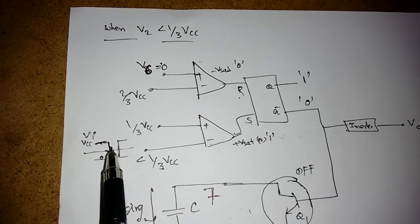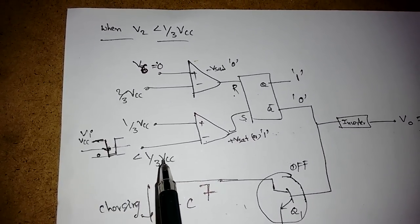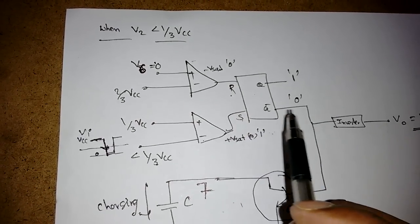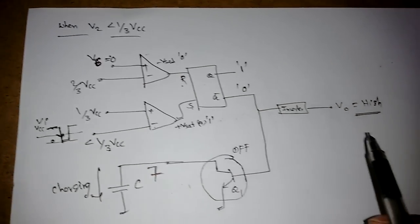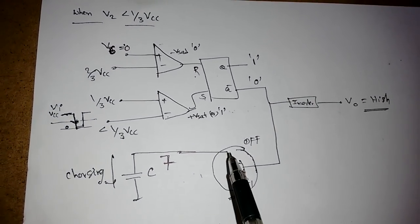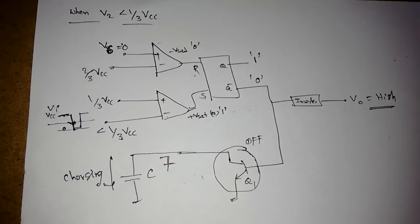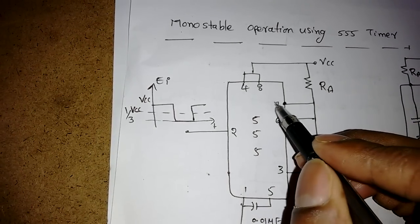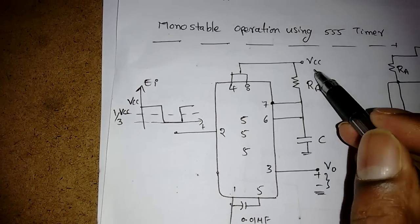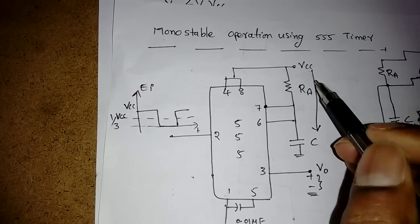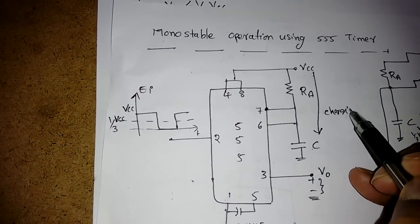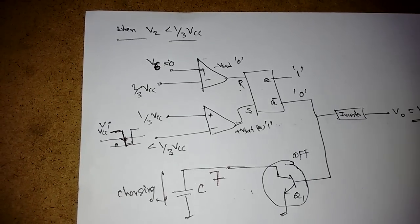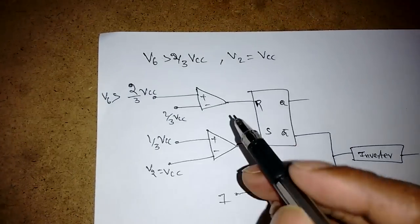To summarize: whenever we apply a negative going trigger pulse less than 1/3 Vcc, we get S=1 and R=0, so Q becomes 1, Q bar becomes 0, and the output becomes high. The transistor is off, and the capacitor charges. The capacitor sees the path through Vcc, RA, and C. So the capacitor charges from 0 volts through RA. The charging continues until we examine the conditions at pin 6.